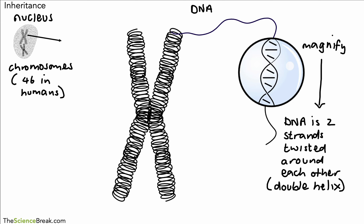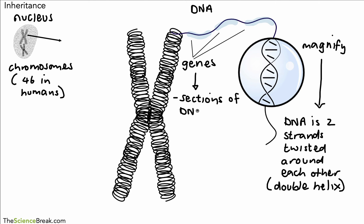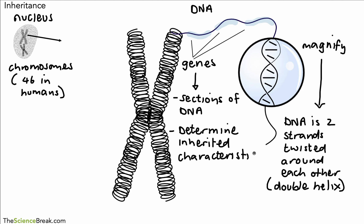What we want to focus on is that along the DNA we have small sections — highlighted in blue — and these are genes. I've shown three genes along our DNA. Genes are short sections of DNA, and the second important part is that they determine inherited characteristics — characteristics that are inherited from parents. That's a very important term to highlight.